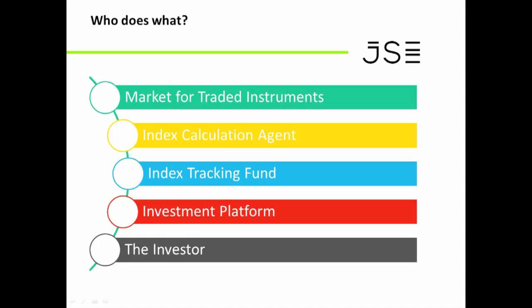Let's talk about the system — who are the role players and who does what. I've put up five key ones here. At the very top is the marketplace. The JSE at its very core business is a trading platform. We provide a marketplace for buyers and sellers to come together and trade instruments, whether that's equities, bonds, or derivatives. That's really our core business.